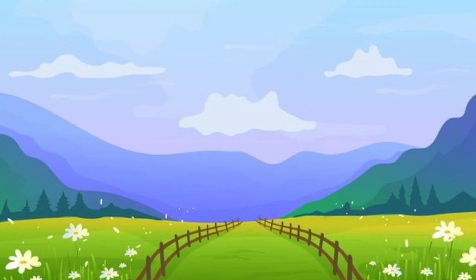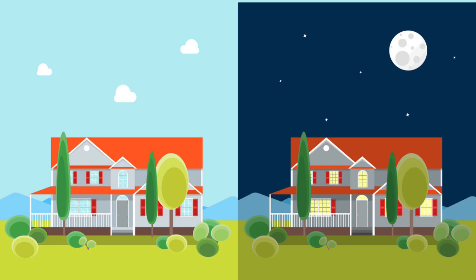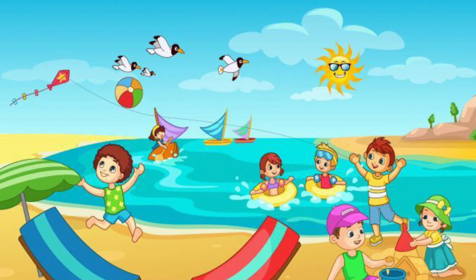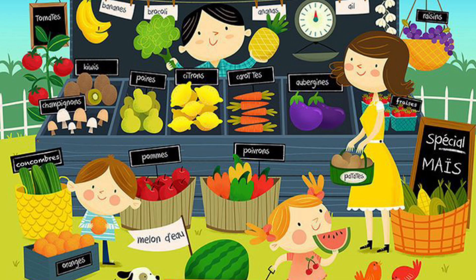Summer comes after Spring and before Autumn. Summer is the hottest season of the year. In Summer, the days are long and the nights are short. Schools will be on holiday in the Summer season. Children love to go on vacation in the Summer season. Summer season brings a variety of different vegetables and fruits.